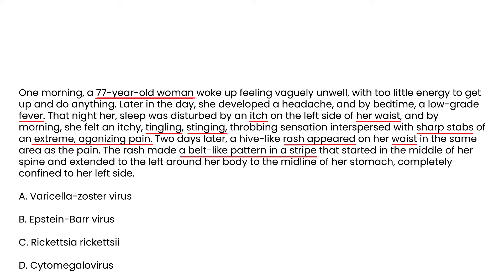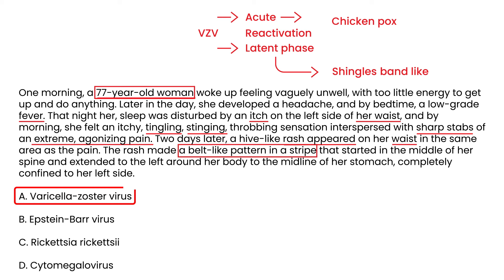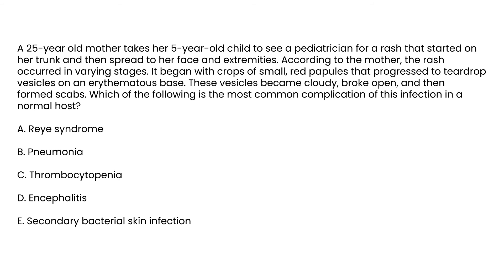This vignette is describing shingles. Varicella-zoster virus in its acute phase causes chickenpox, but later — many years later, as seen in this 77-year-old — reactivation of the latent phase can result in shingles. Shingles is this belt-like or band-like rash that appears in a dermatomal distribution across the skin. The answer is varicella-zoster virus.